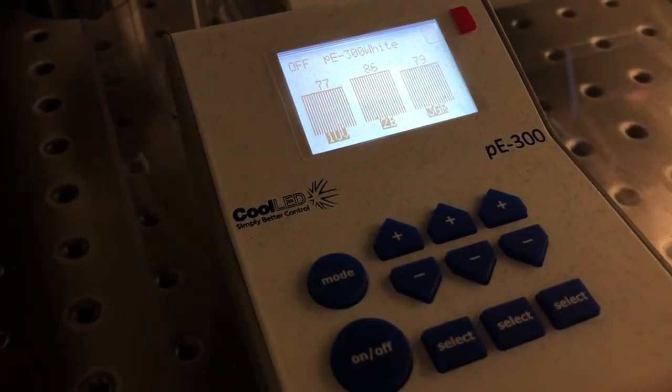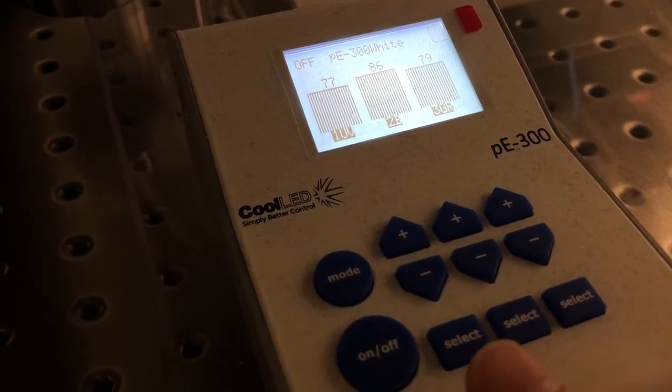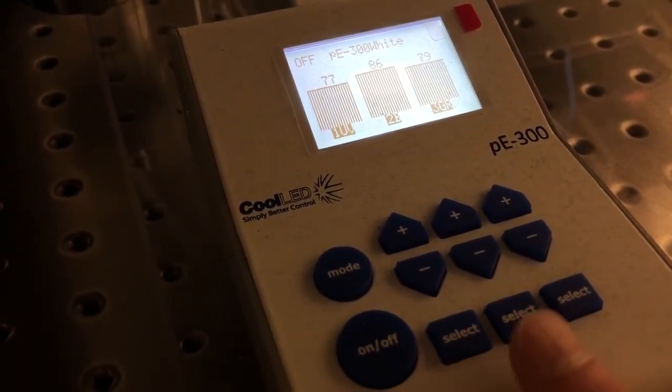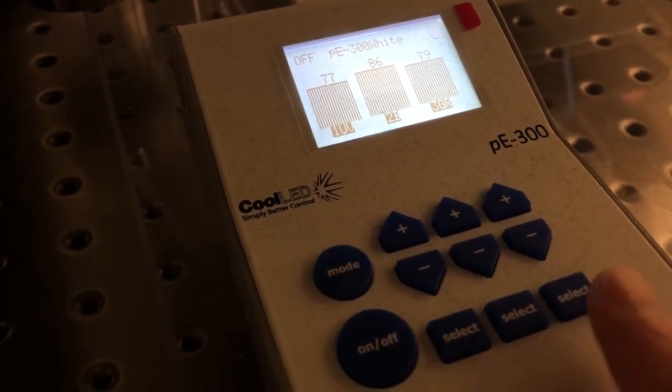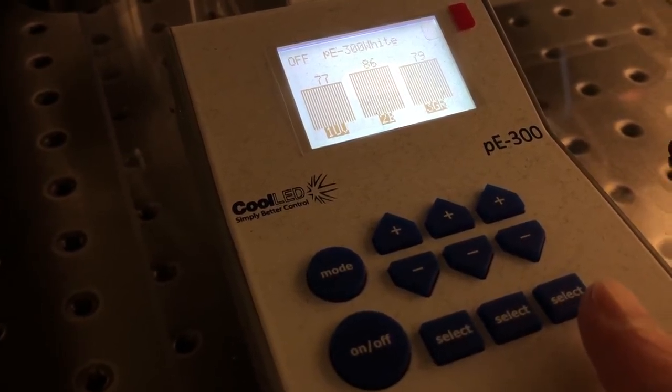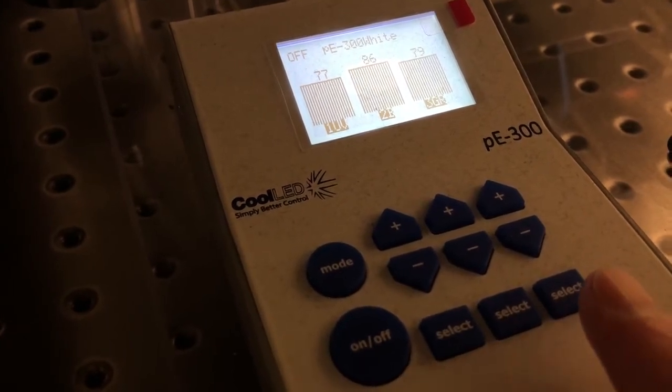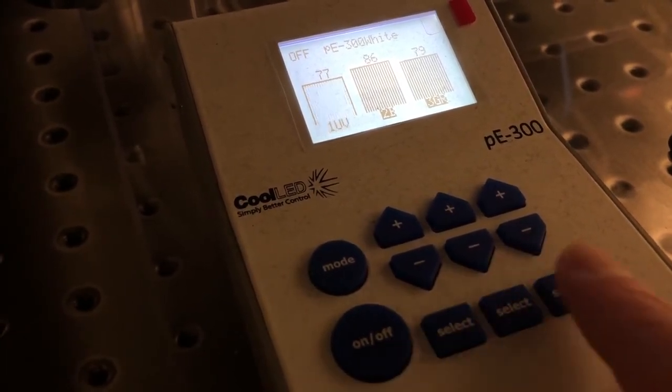One final note about this illumination system is that it has actually three LEDs. One that is necessary for DAPI, another for GFP, another for RFP or similar fluorophores, and by default they will all be turned on, but if you want, you can turn off ones that you are not using.